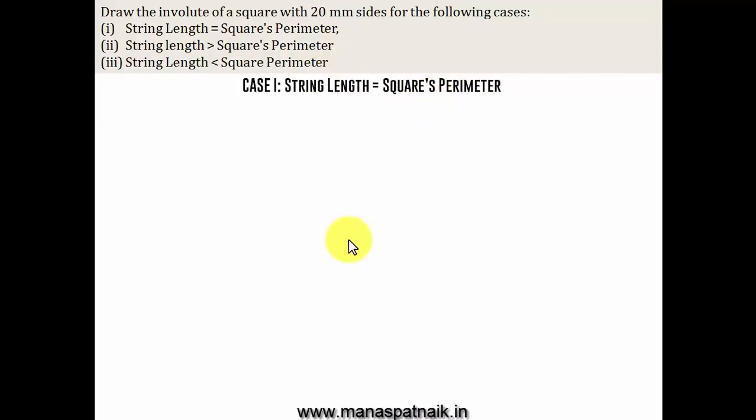String length is equal to square's perimeter. So, square, you know very well, it has four sides. Let's say its four corners be represented by 1, 2, 3, and 4. Now, this over here is 20, 20, 20, 20. So, in totality, the overall perimeter is going to be equal to 4 times 20, that is 80 millimeters.